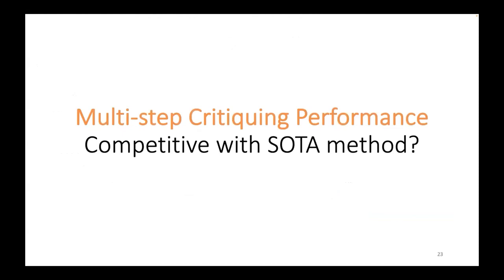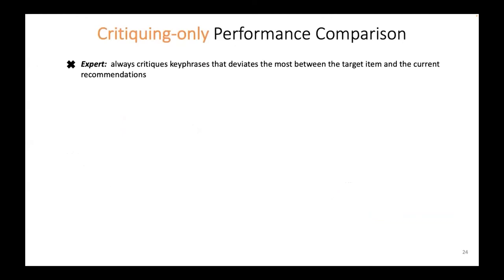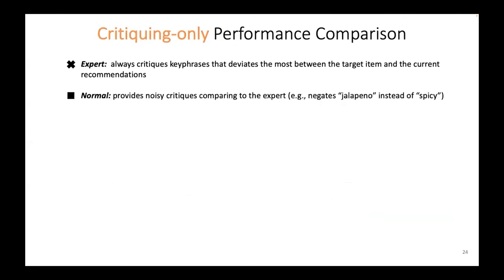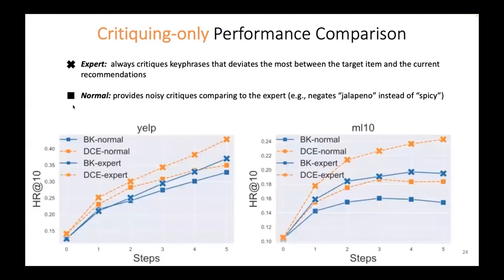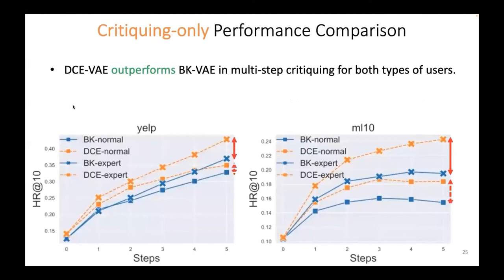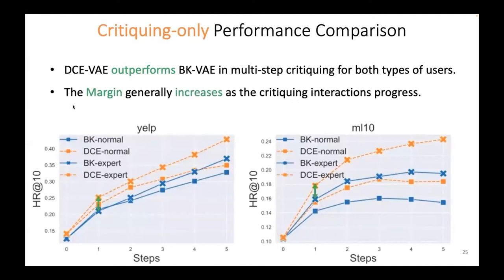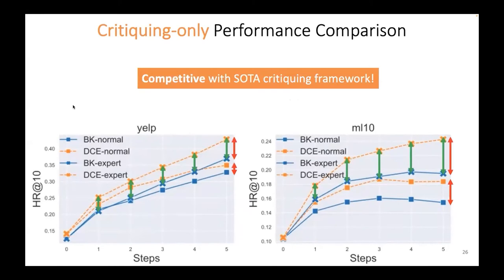For multi-step critiquing performance, we have two types of simulated users: experts, who always critique keyphrases that deviate most between the target item and current recommendations, and normal users, who provide noisy critiques — for example, negating jalapenos instead of spicy. The results show that DCVAE outperforms BKVAE in multi-step critiquing for both user types, and the margin generally increases as critiquing interactions proceed. We can conclude that DCVAE is competitive with the state-of-the-art critiquing framework.